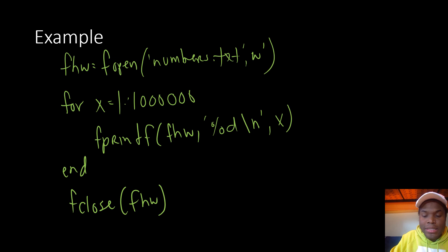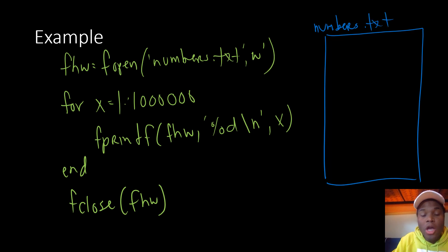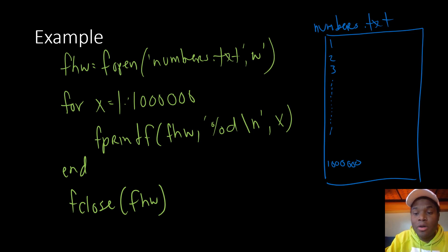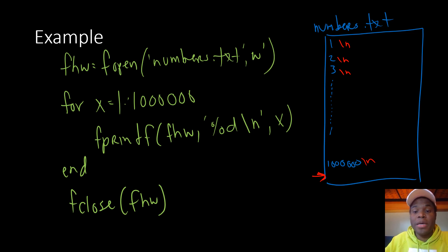This creates a new file called numbers.txt where the first line is 1, the second line is 2, the third line is 3, and so on down to 1,000,000. Notice that every line in our loop includes that \n, including the last one. So since there's a newline character on the last line, we'll actually have a million and one lines in the file — an extra blank line at the bottom.